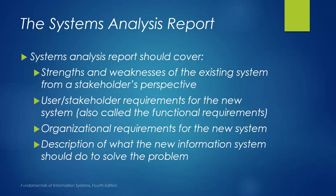Once we are done with the analysis, the team can develop a system analysis report that will cover: strengths and weaknesses of the existing system from a stakeholder's perspective, user and stakeholder requirements for the new system (also called functional requirements), organizational requirements for the new system, and a description of what the new information system should do to solve the problem. The report will be used as a verification point before moving to the design phase — we sit with the client and stakeholders to confirm these are the specifications they are looking for, then make any final adjustments before moving to design.